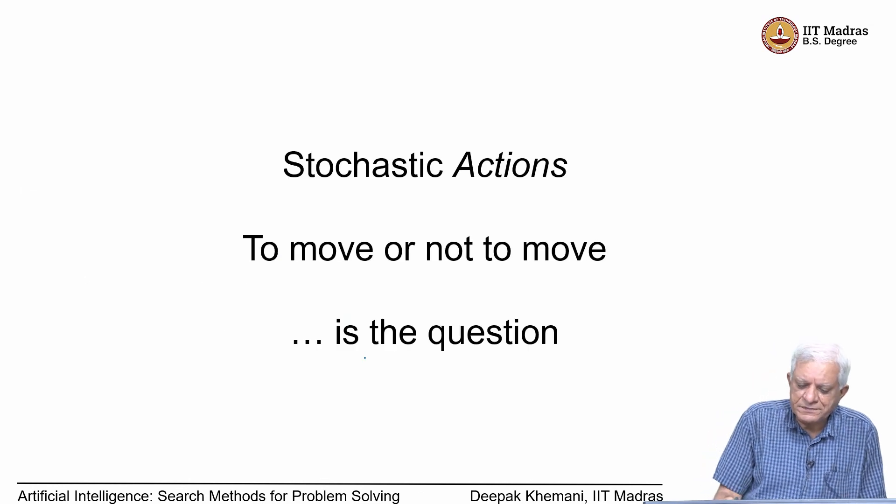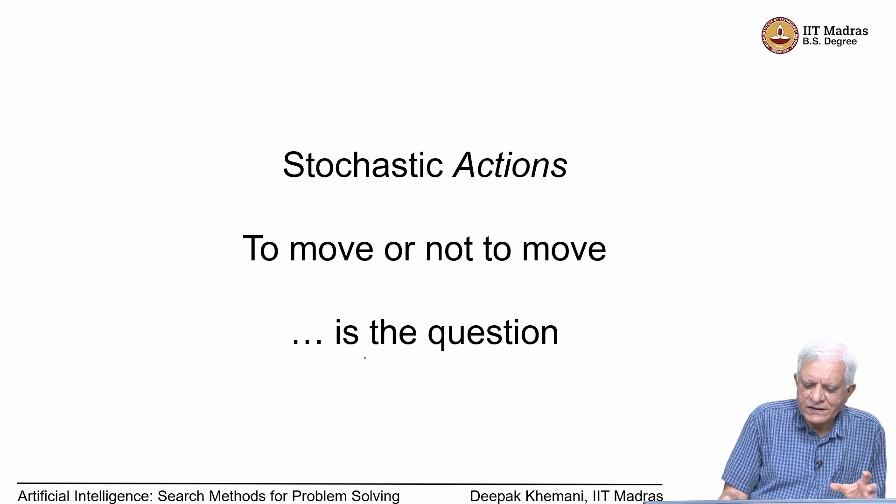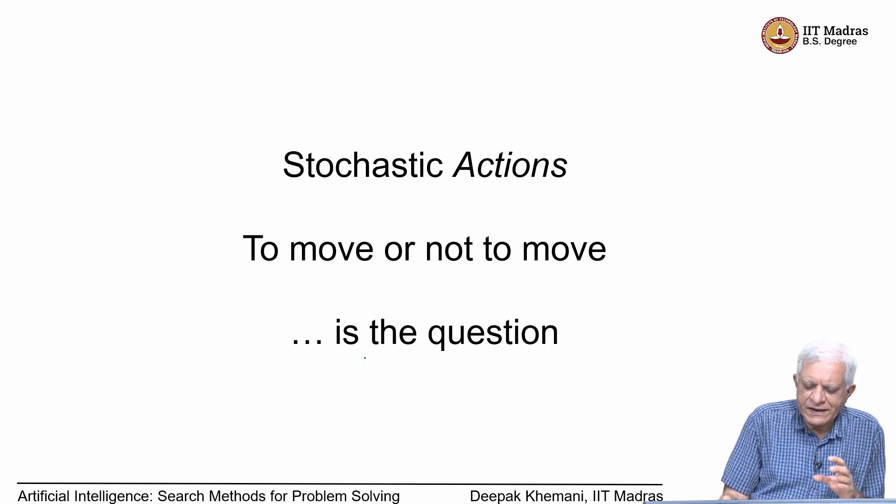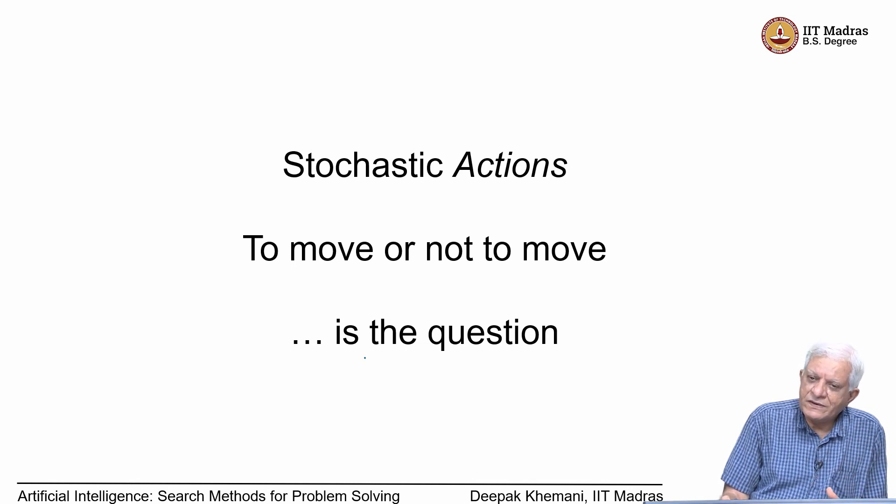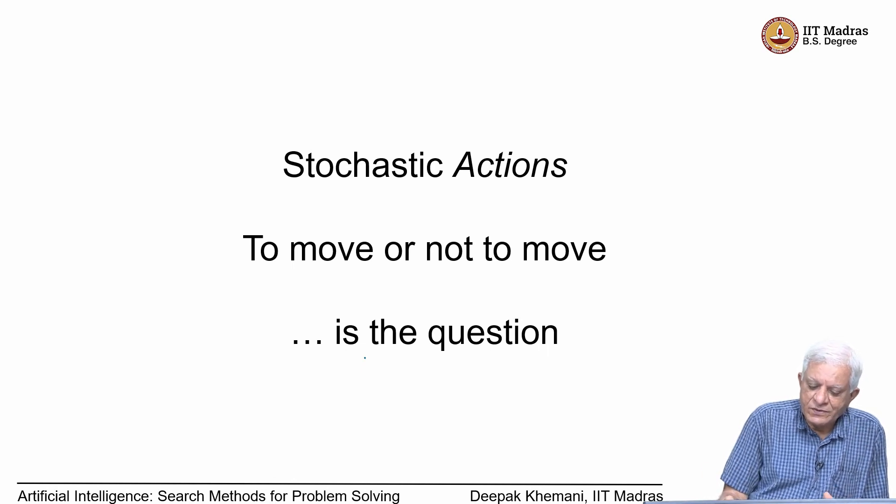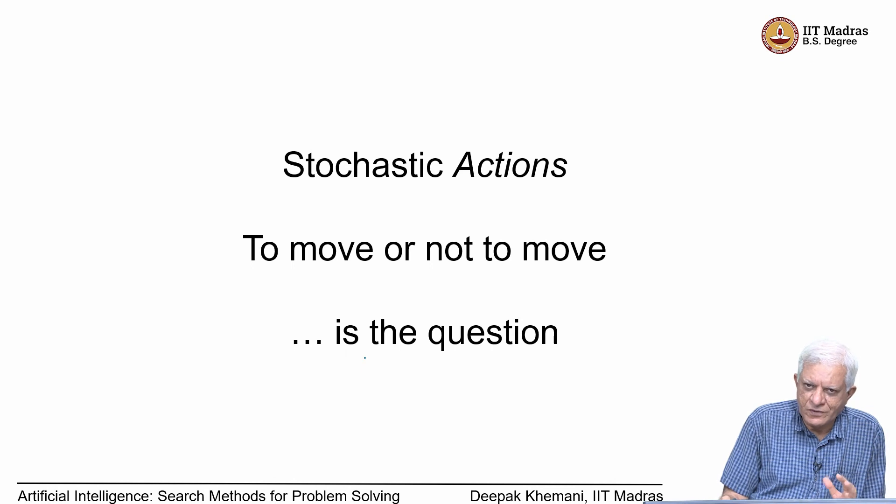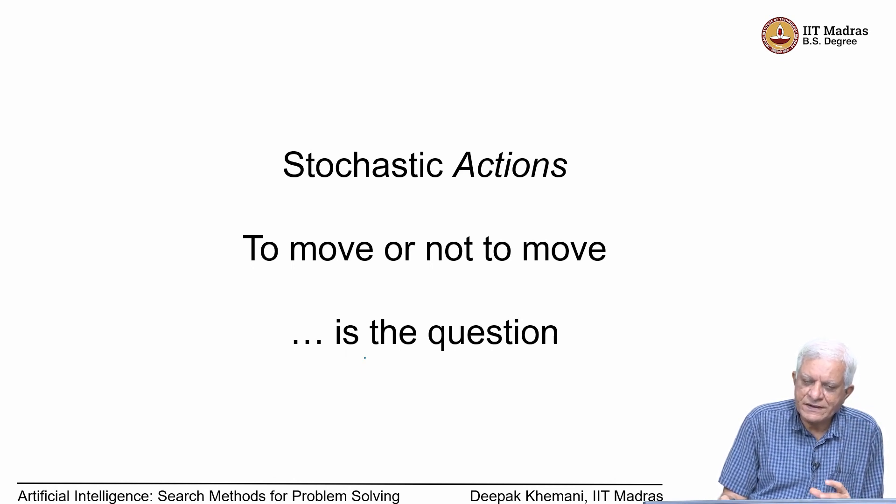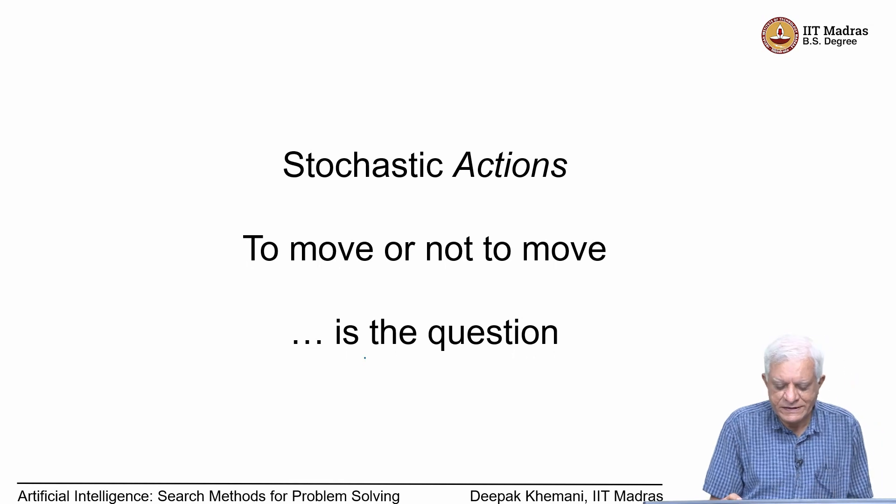Next, we will move onto stochastic actions or randomized actions. So far, in our algorithms, we always do the move generation and deterministically make a move. Now, we will do this probabilistically. The question we will ask is: to move or not to move from a given node to the next node. We will take this up in the next session.